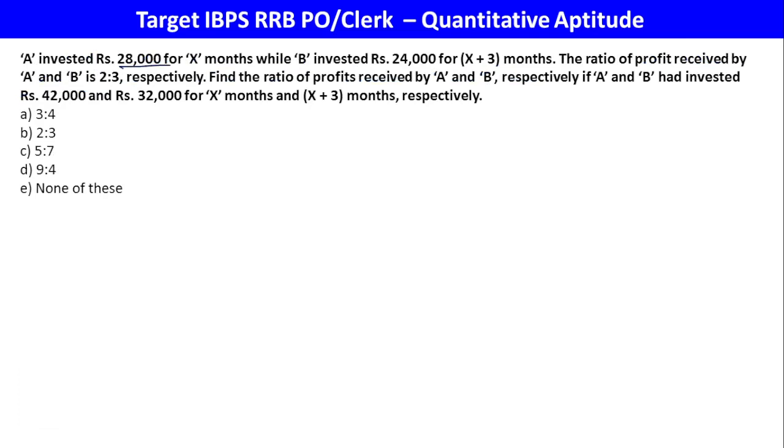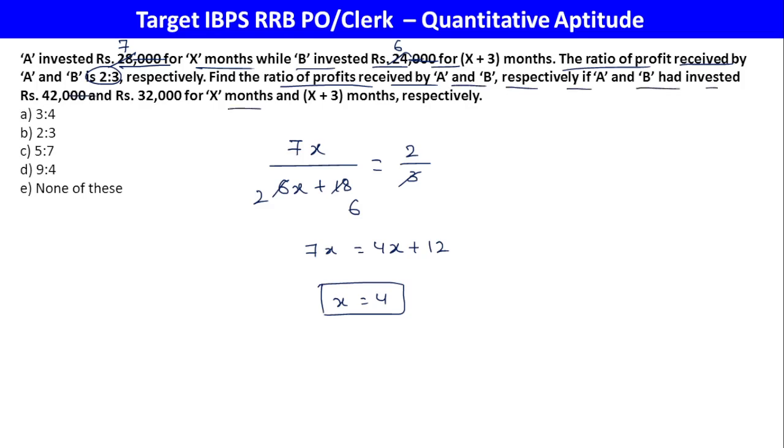A invested 28,000 for x+3 months, B invested 32,000 for X months. The profit ratio is 2:3. Setting up the equation: 7x divided by 6x+18 equals 2:3. Cross multiplying: 21x equals 12x plus 36, so 3x equals 12, giving x equals 4. For the next part, profits ratio is 21:16 for X months. Next 30:16 for x+3, which is 7 times 4 to 4 times 3 is to 4. Option A is the final answer.